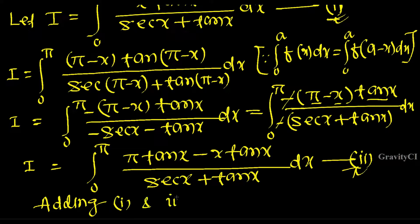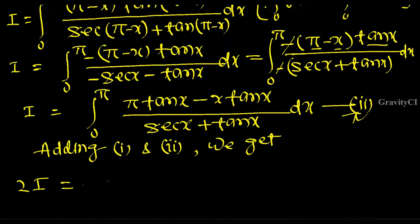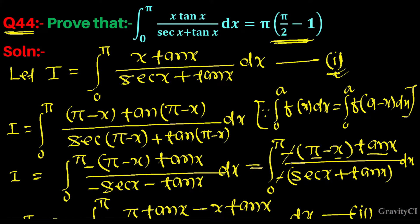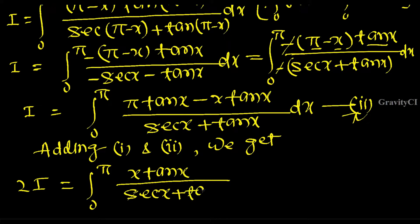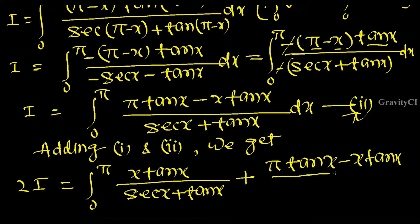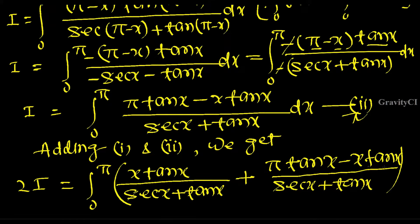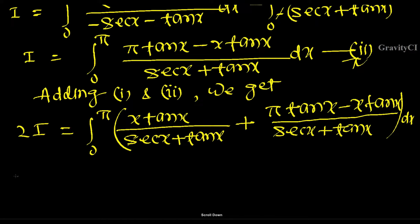Now adding equation one and equation two, we get 2I equal to integral from 0 to π of [x·tan x / (sec x + tan x)] plus [(π·tan x - x·tan x) / (sec x + tan x)] dx.